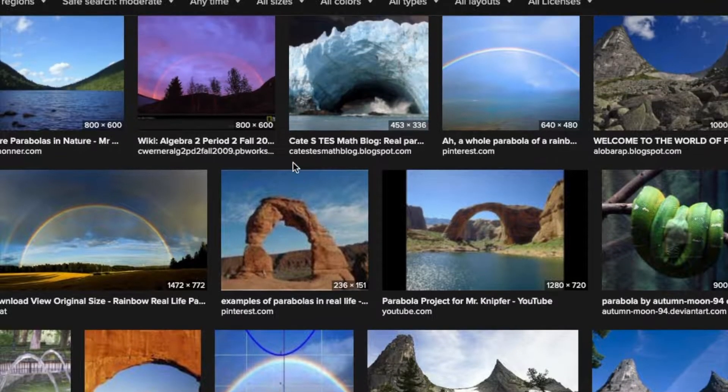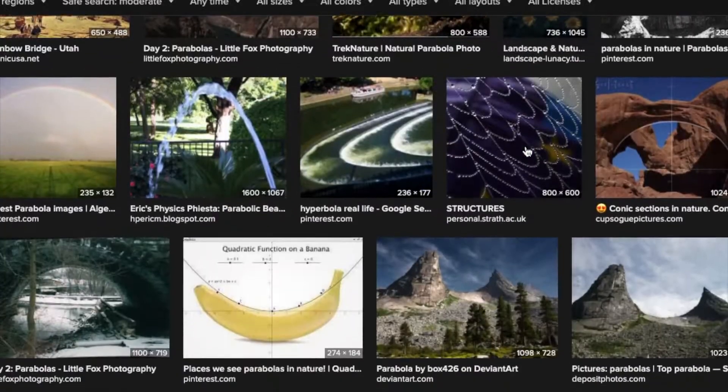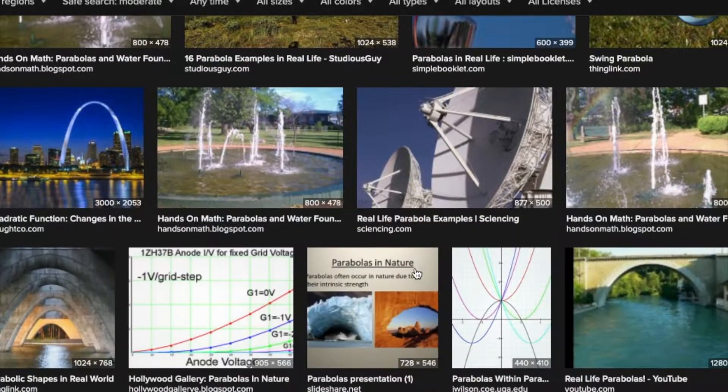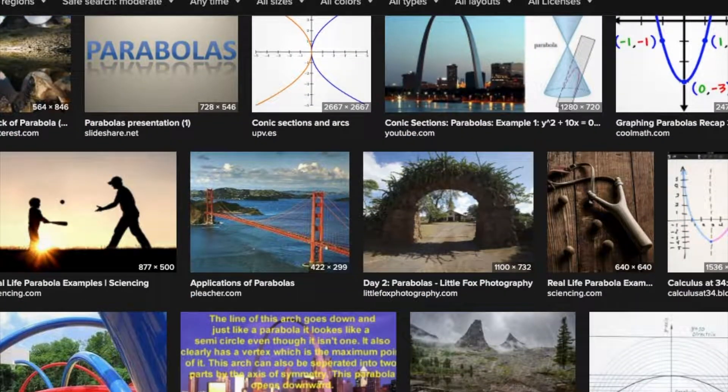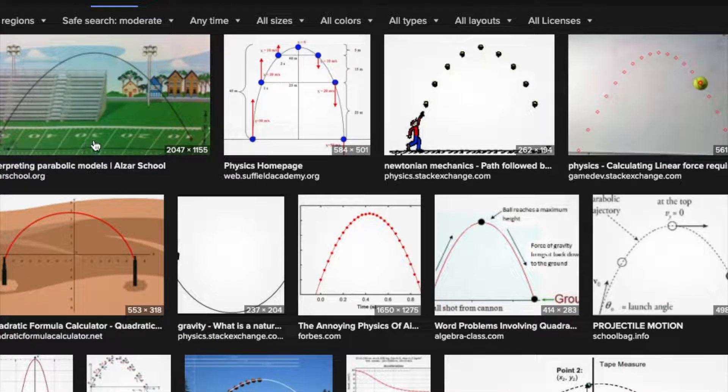We see parabolas in nature from rainbows to archways. The golden arches in McDonald's use parabolas. We see them over and over, including the way that a ball falls. Because of gravity, your acceleration and velocity when throwing a ball in the air towards or away from you will make a parabolic shape.